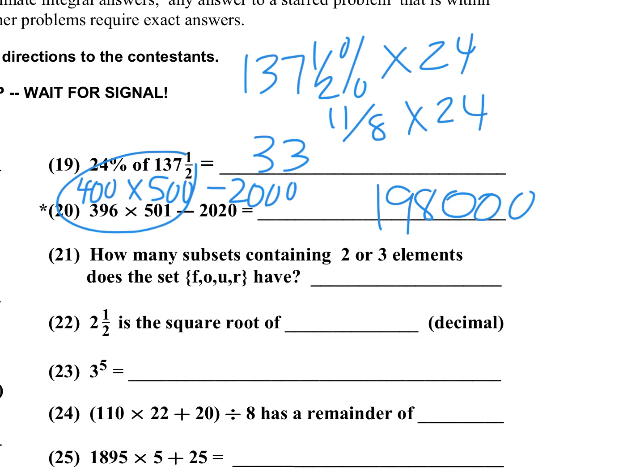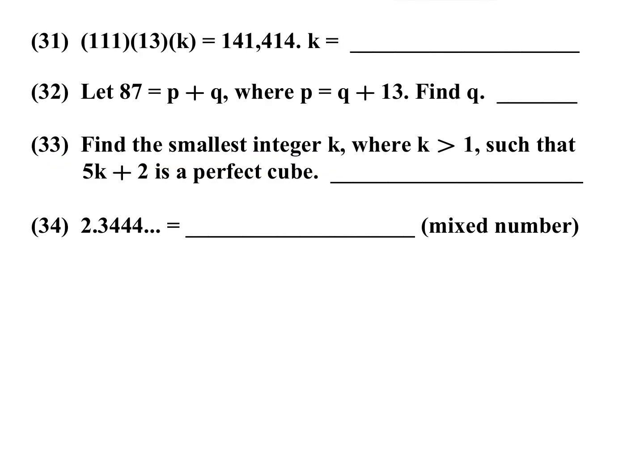Number 32: 87 equals p plus q where p equals q plus 13. Find q. This is nothing other than systems of equations. If I subtract q here, I'm going to have p minus q is equal to 13. So all you do is add those two together and you get 100 is 2p, so p is 50. We're looking for q, so q would be 87 minus 50, which would be 37.